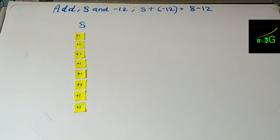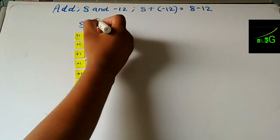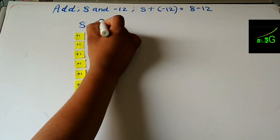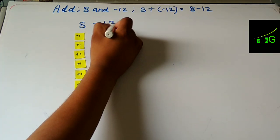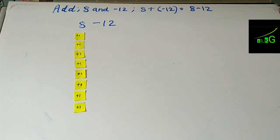Now we will put twelve strips of minus one — one strip of minus one at a time — until we have twelve.